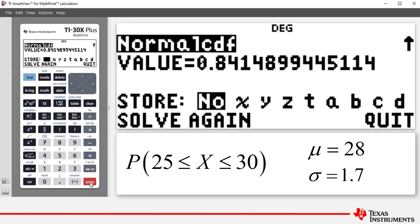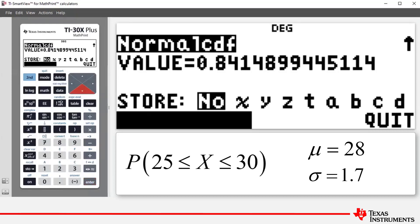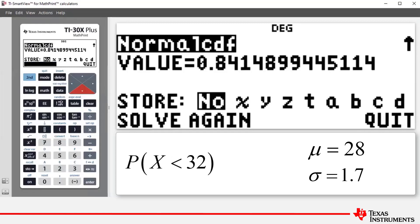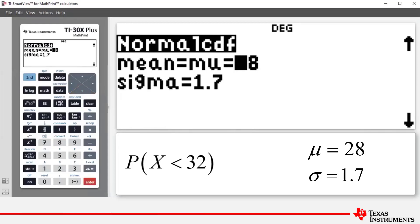We also have two other options: one is solve again and the other is quit. Now we're going to take the solve again option because we've got a part B which involves the same mean and the same standard deviation. So we highlight solve again and press enter, and it takes us back to that normal CDF screen with the mean and sigma already entered.